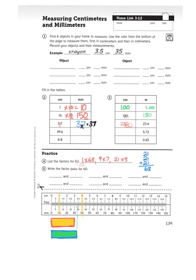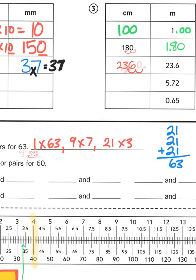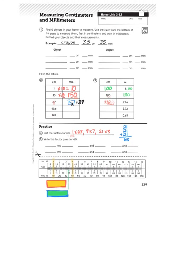So, I have three factor pairs. 1 times 63, 9 times 7, and 21 times 3. If you have questions about centimeters, millimeters, factors, multiplying by 100 or dividing by 100 or measuring objects in your house, talk to your math teacher. They would be happy to help you. Otherwise, friends, we will talk again soon. Thanks.